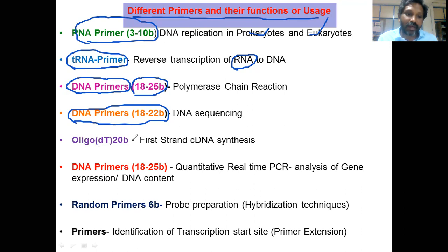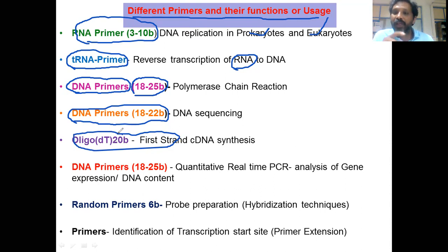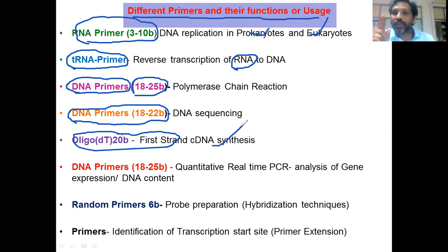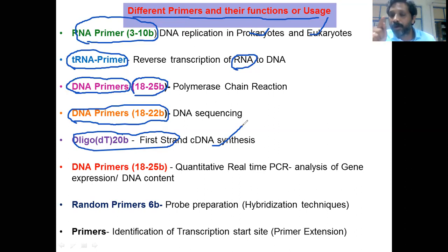Oligo-dT primers are used in reverse transcription, specifically in first-strand cDNA synthesis. Eukaryotic mRNA carries a poly-A tail at the 3' end. The oligo-dT primer binds to that poly-A tail of the mRNA, and then reverse transcriptase converts the mRNA into cDNA using the oligo-dT primer. This step is called first-strand cDNA synthesis.